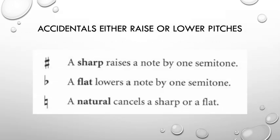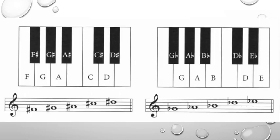An accidental is a sign placed in front of a note that alters its pitch by raising or lowering. Here we see that a sharp, which looks like the hashtag symbol, raises a note by one semitone. A flat, which kind of looks like a lowercase B with a point on the bottom, lowers a note by one semitone. And a natural, which is this symbol here, cancels a sharp or a flat. So, here we can see the sharp and flat notes that happen in those black spaces. So, F raised to F sharp, G raised to G sharp, A raised to A sharp, C raised to C sharp, and D raised to D sharp, with the same being true going the other way. G lowering to G flat, A to A flat, B to B flat, D to D flat, and E to E flat.